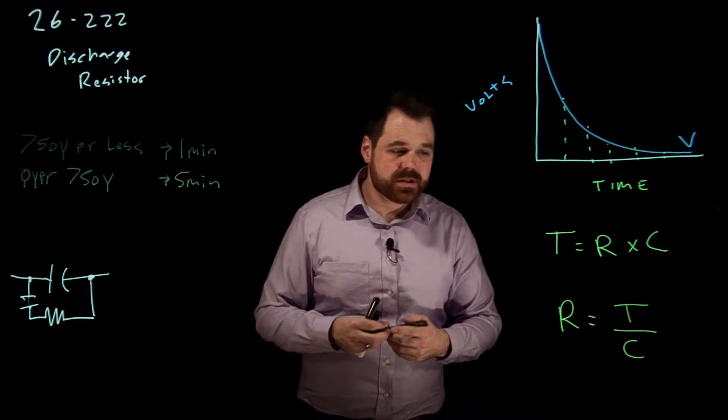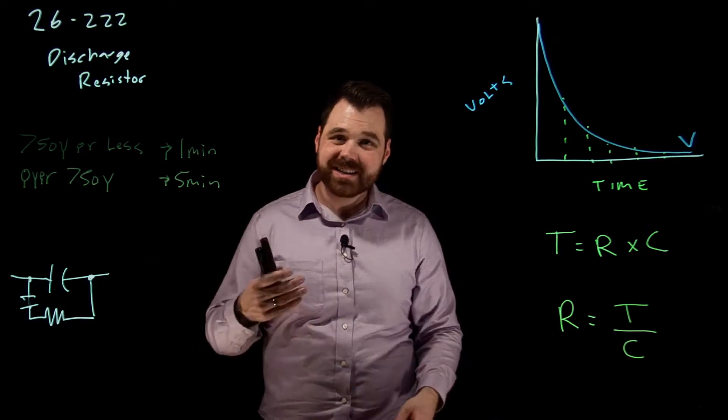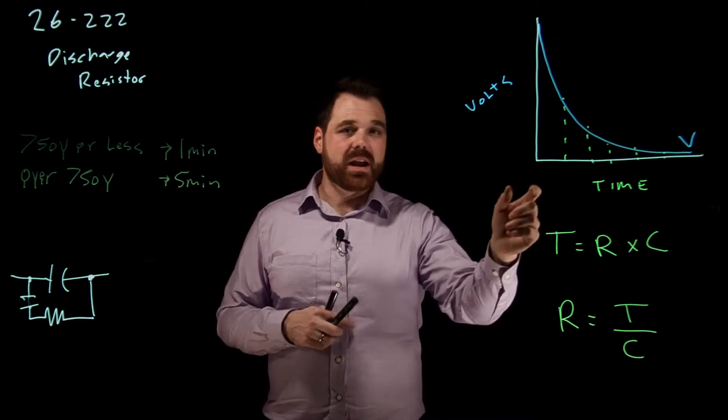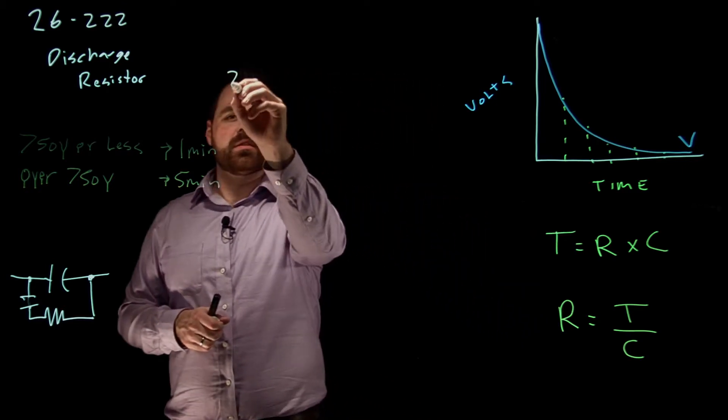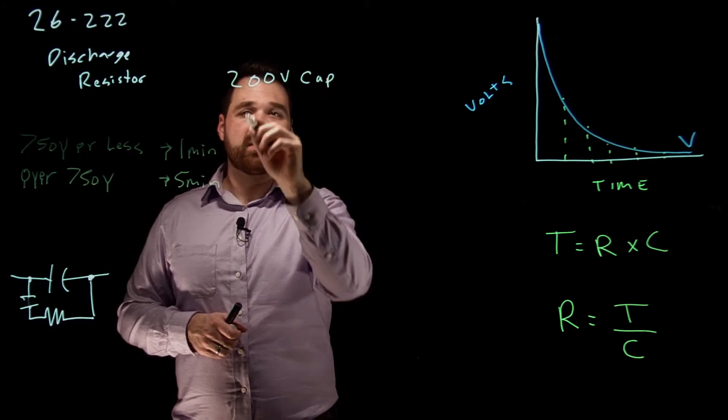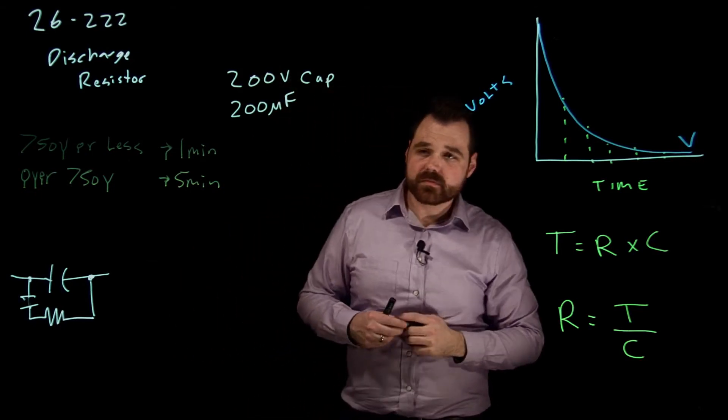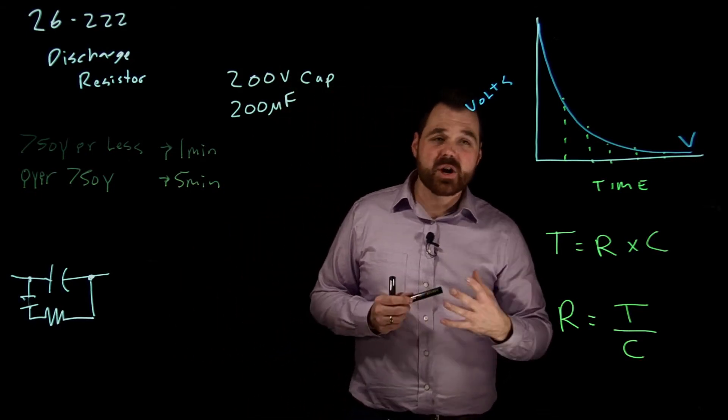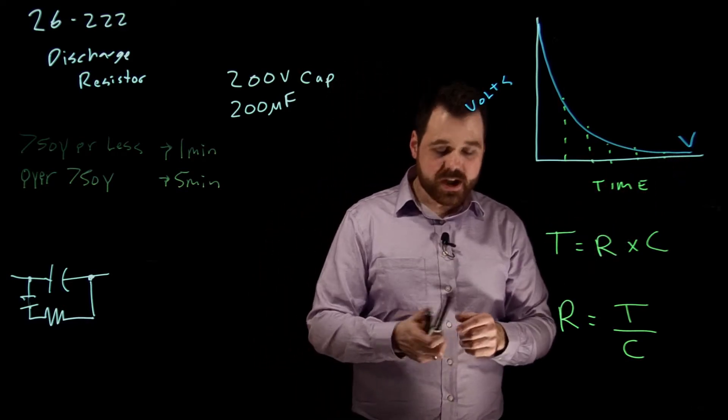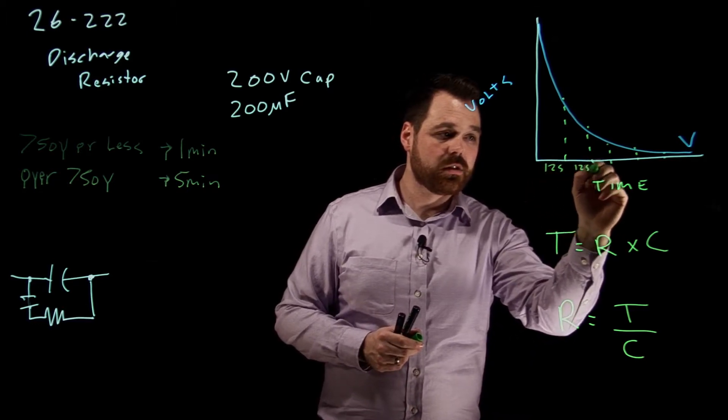I want to show you an example of this. So we need to know the resistance. This time is the time of one time constant. So if I'm talking about one time constant, and I have, let's say I have a 200 volt capacitor, and it is 200 microfarads. So I've got this connected. I know I have one minute to go from maximum voltage to zero. One minute, if I have five time constants, that would mean each time constant would be 12 seconds.